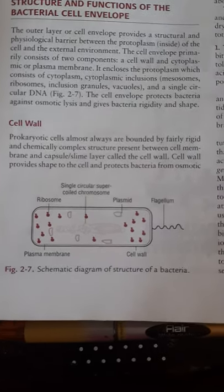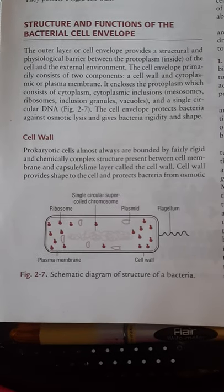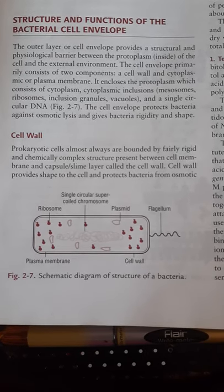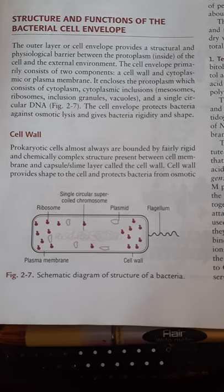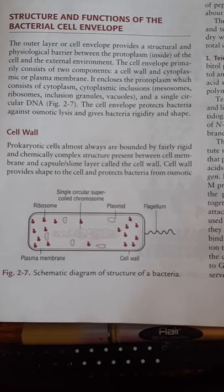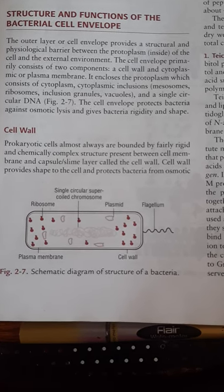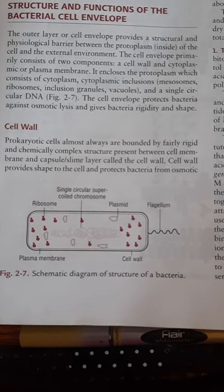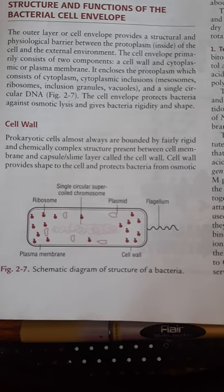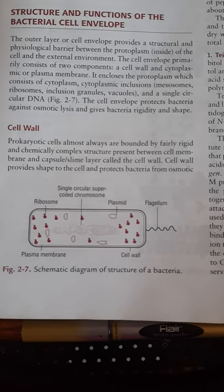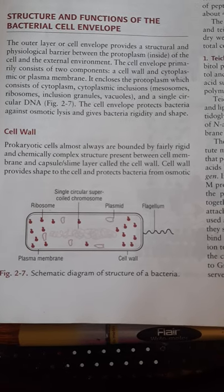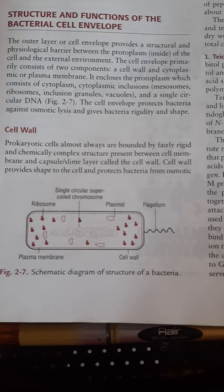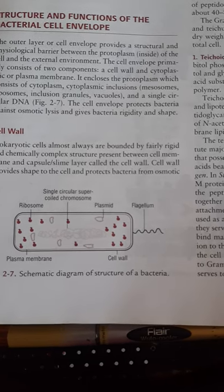Next is the cell wall. Prokaryotic cells almost always are bounded by a fairly rigid and chemically complex structure present between the cell membrane and capsule or slime layer, called the cell wall. The cell wall provides shape to the cell and protects it from osmotic changes.